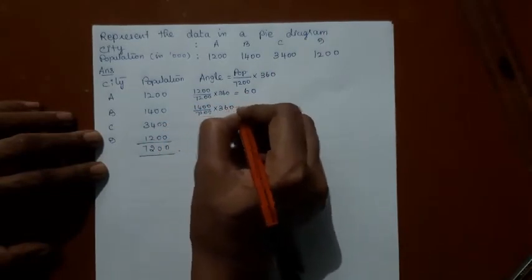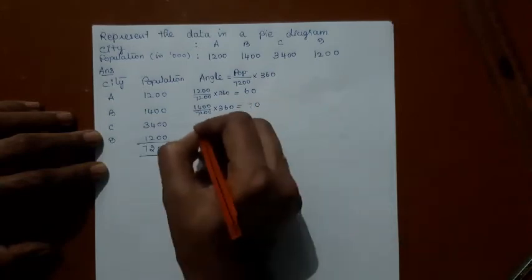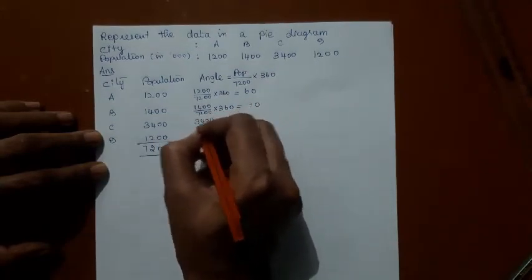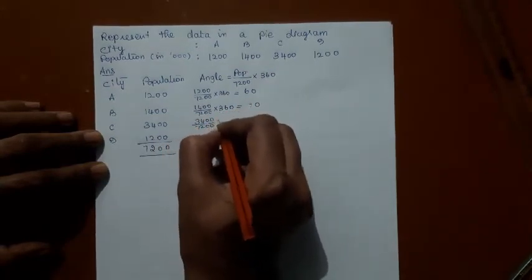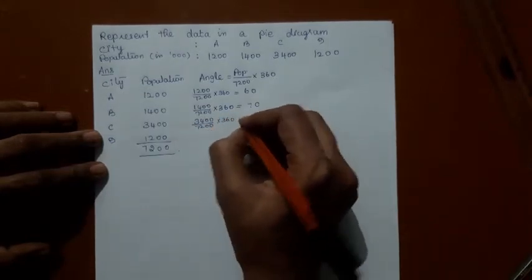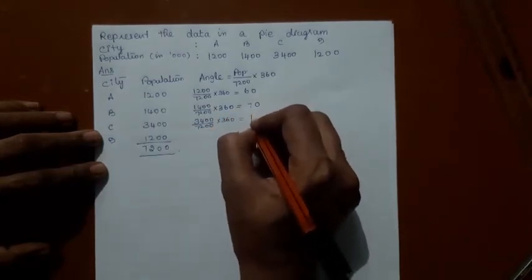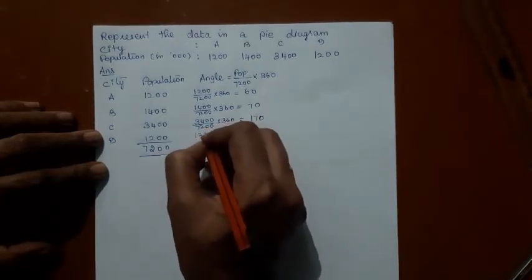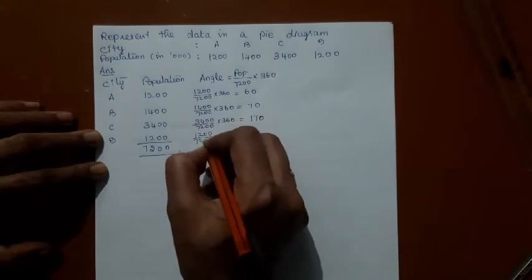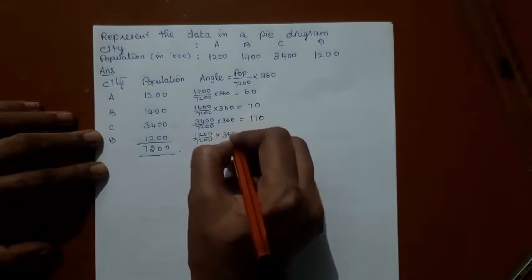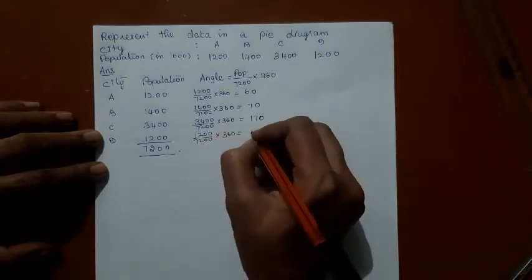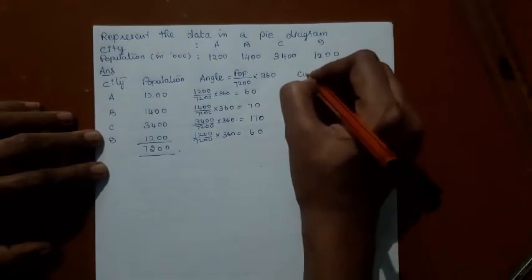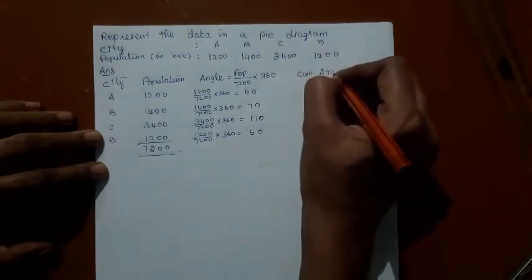3400 by 7200 into 360 is 170. 1200 by 7200 into 360 is 60. Now calculate the cumulative angle, because I'm going to use the pro circle to plot all these points.